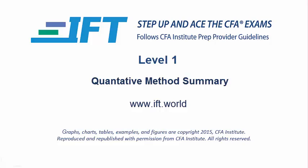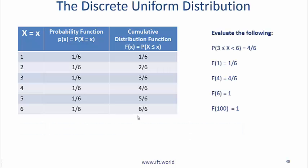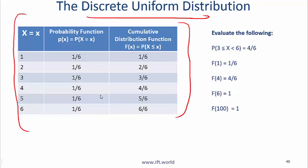This video is a summary of the quant reading on common probability distributions. The most basic is a discrete uniform distribution, shown right here. So this is one discrete uniform distribution. What does this mean?